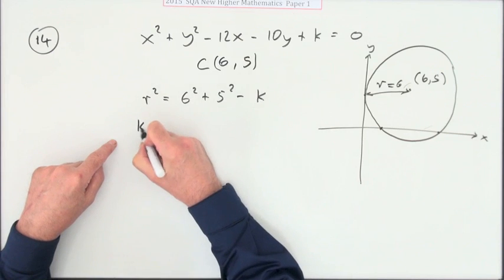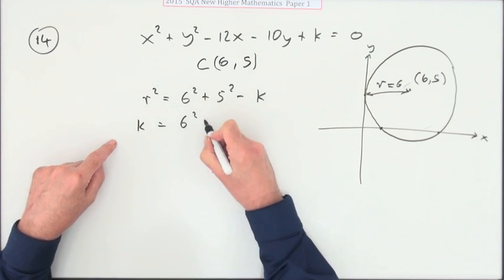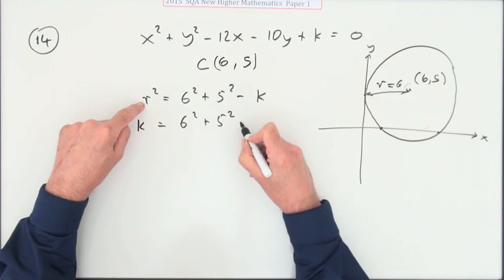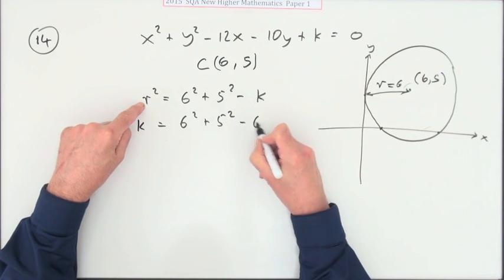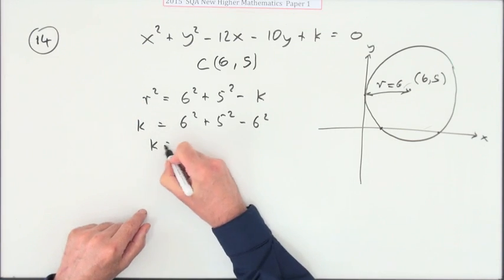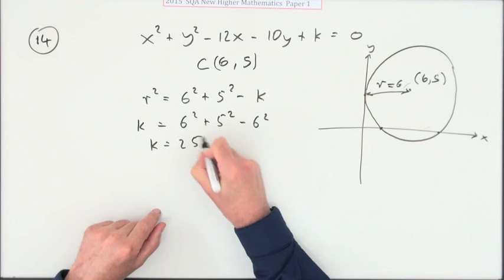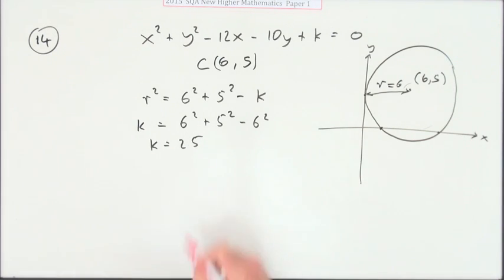And I know that the radius is 6. So that means I've got, taking the k across, I've got k will be 6 squared plus 5 squared minus the radius squared, which is 6 squared. They'll cancel out just leaving you with 25. And that's it. Done.